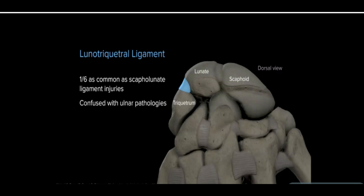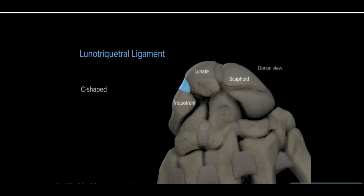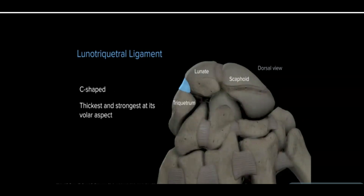This ligament is similar to the scapholunate ligament in that it is also C-shaped, though it thickens and is strongest at its volar aspect instead of the dorsal aspect.